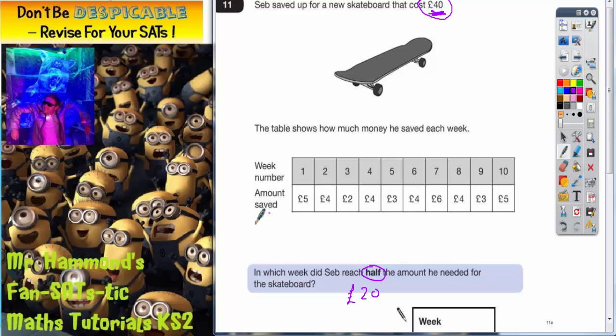So what we're going to do is look at what the running total is each week by adding up the amounts he's saving each week and seeing what total he's got so far. So in week 1, because he's only just started saving, he would only have £5. Week 2 he then adds on £4 which takes it to £9. Week 3 adds on £2 which takes it to £11.